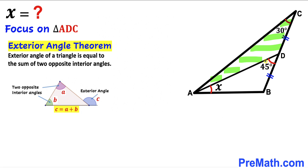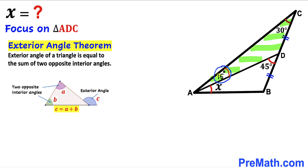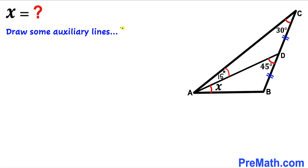So in our case, angle ADB is the exterior angle and the two opposite interior angles must sum to 45 degrees. Therefore, angle CAD must be 15 degrees, since 15 degrees plus 30 degrees equals 45 degrees. Now we are going to draw some auxiliary lines.